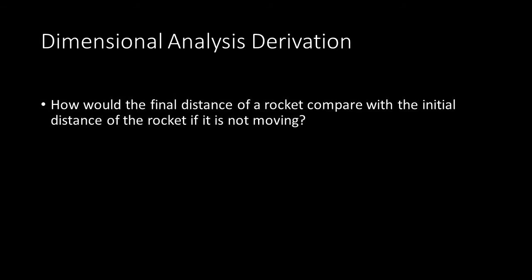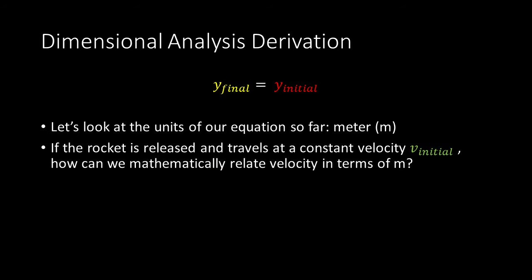Let's begin with some dimensional analysis. How would the final distance of a rocket compare with the initial distance of the rocket if it is not moving? We could state that the final distance is equal to the initial distance. Let's look at the units of our equation so far. Well, they're in meters.